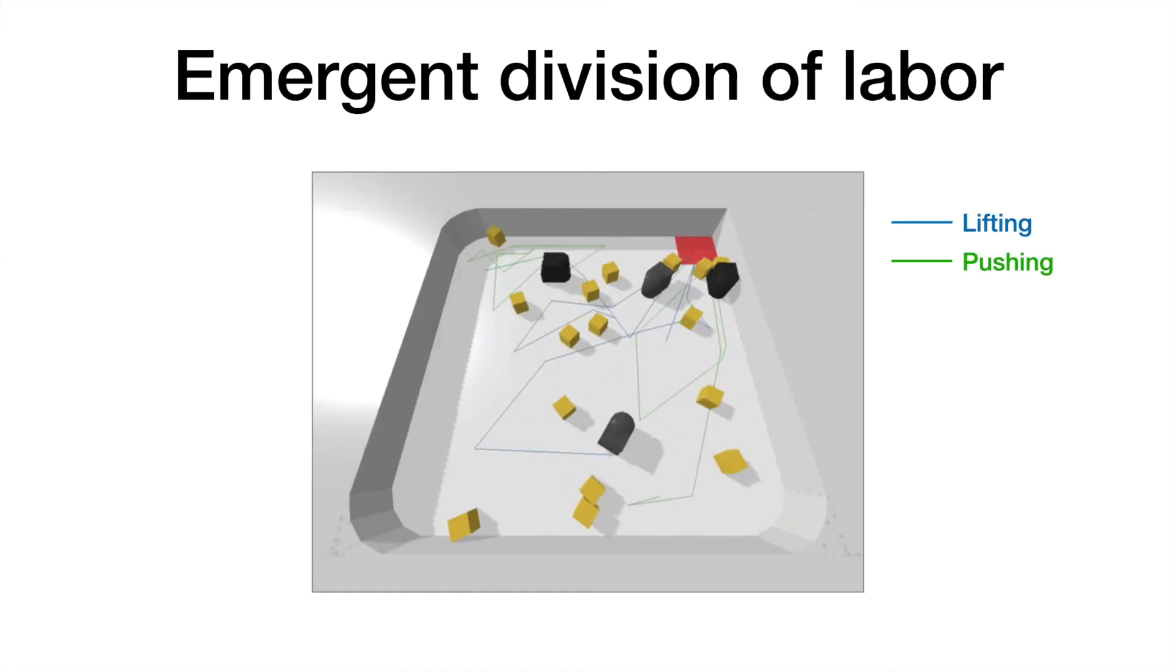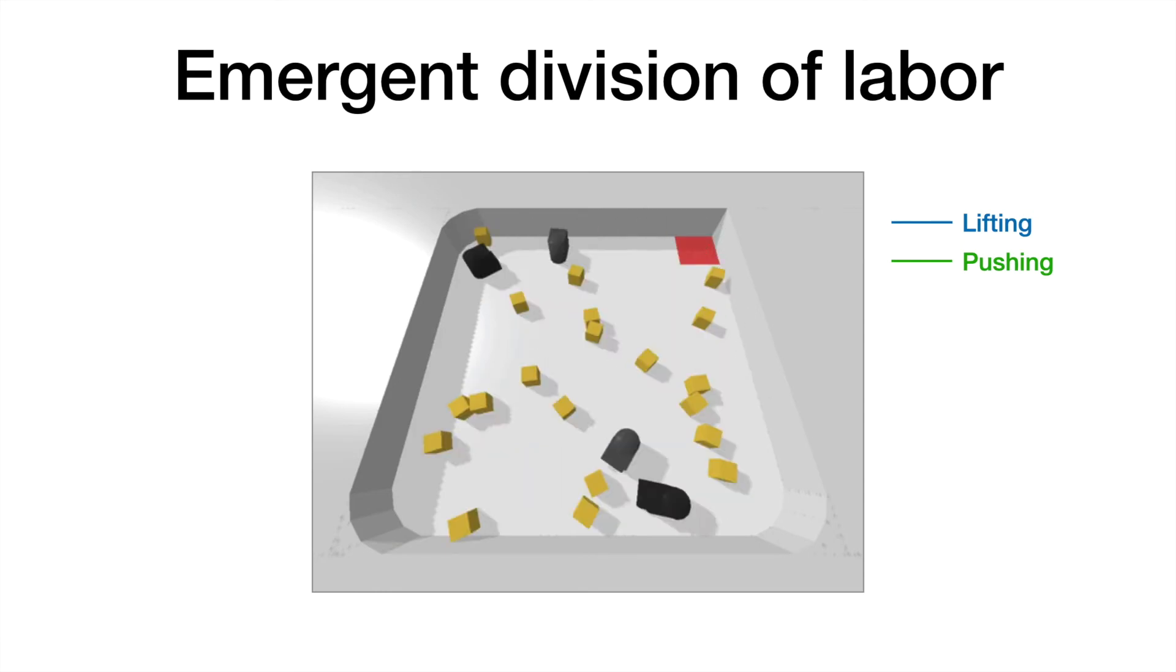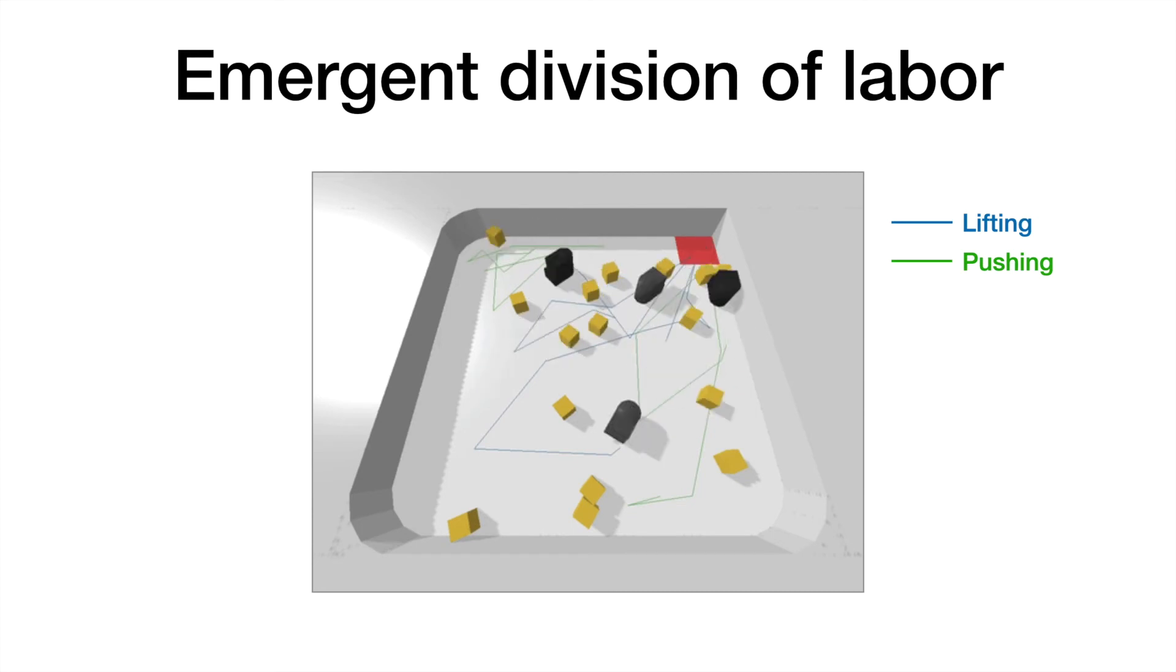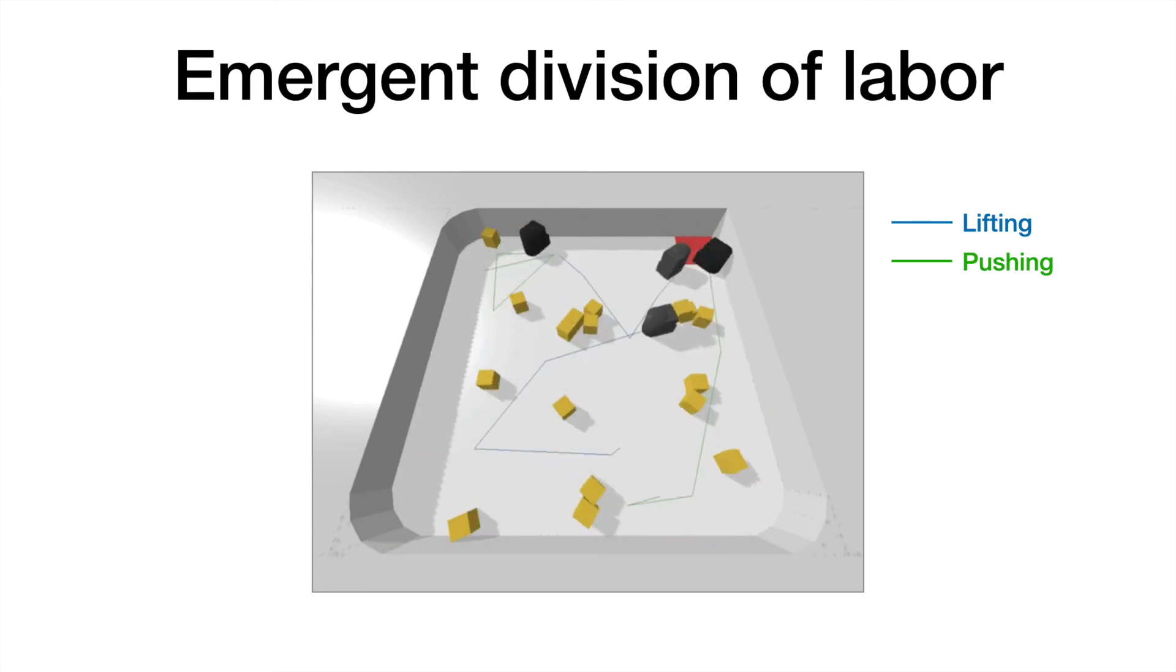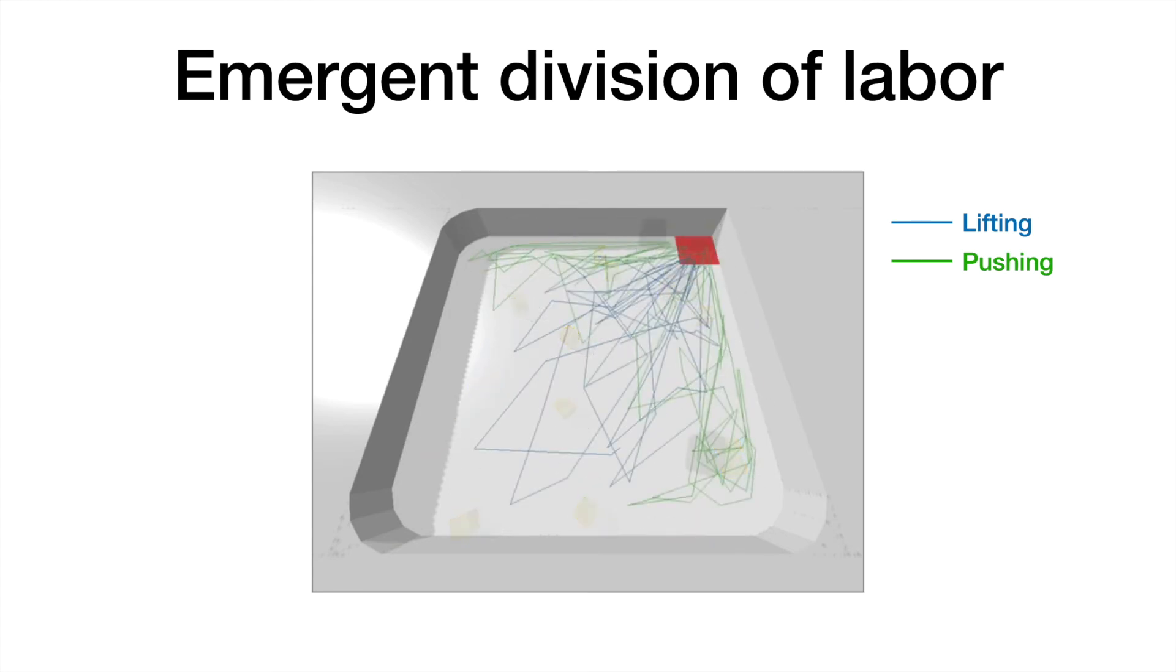We can see the division of labor more clearly through visualization of the movement trajectories. Here we can observe that the green pushing trajectories are mostly along the walls, whereas the blue lifting trajectories cover more of the center. The different robot types are able to learn specialized behaviors that complement each other's strengths and weaknesses.